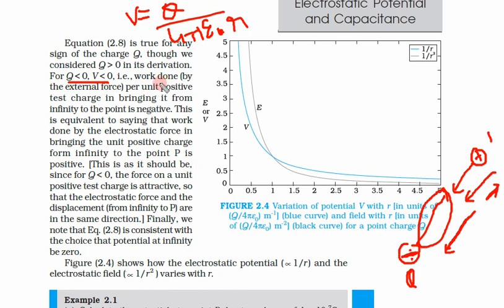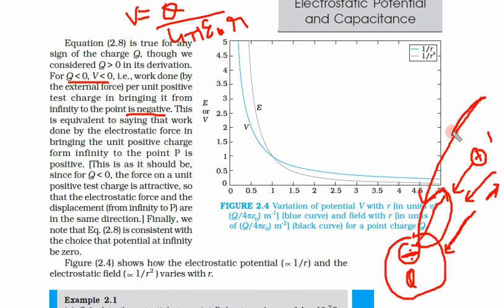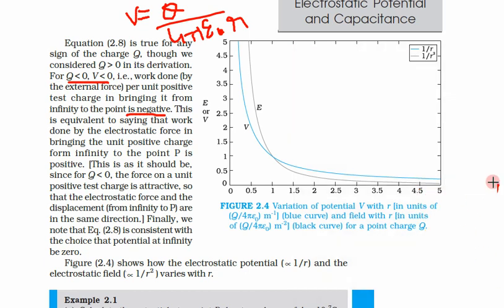If this q charge is negative, then the unit positive test charge is automatically coming toward it — you are not doing work; instead the work itself is negative because the charge moves on its own. Hence work is negative. This is equivalent to saying that the work done by the electrostatic force in bringing the unit positive charge from infinity to point p is positive.